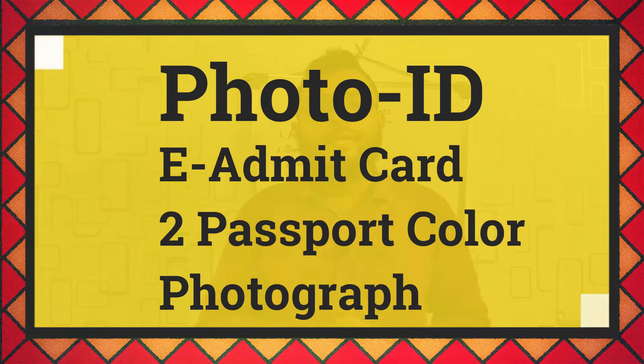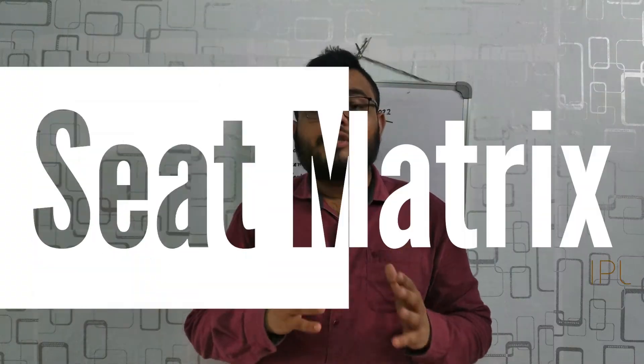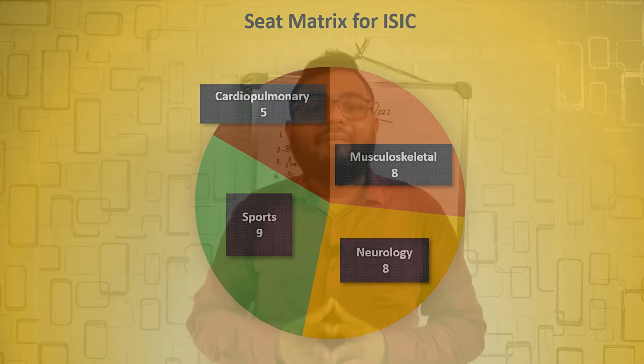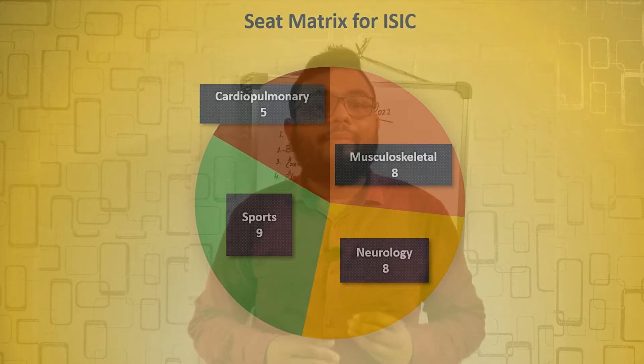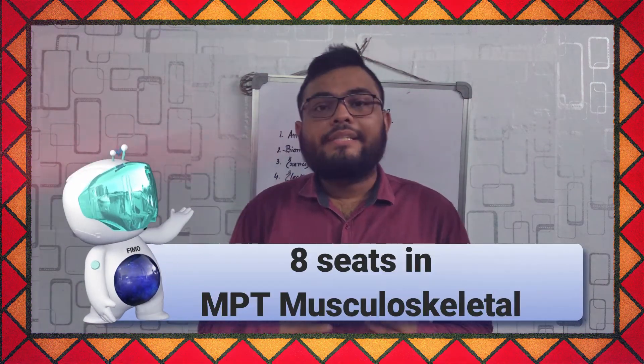You need to bring a photo ID, your e-admit card, and 2 recent color passport size photographs. The total seats for ISIC Institute of Rehab Sciences: MPT musculoskeletal and MPT neurology have 8 seats each, MPT sports has 9 seats, and MPT cardiopulmonary has 5 seats. For Banarsidas Chandiwala Institute there is only MPT ortho with 8 seats. If you passed your bachelors from Delhi you are eligible for the 85% quota; if from outside Delhi you fall under the 15% outside Delhi quota, so the competition is tough.